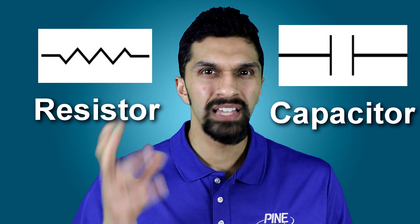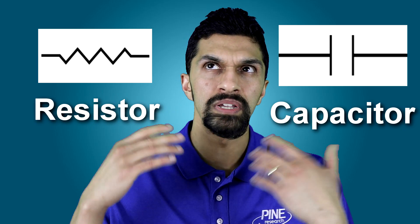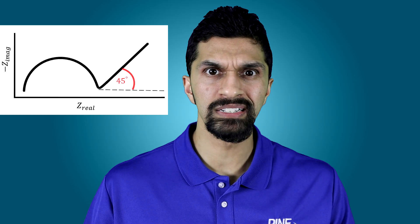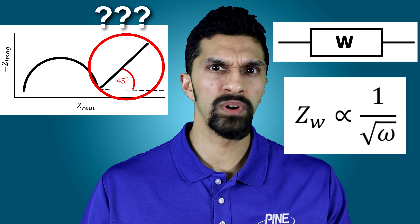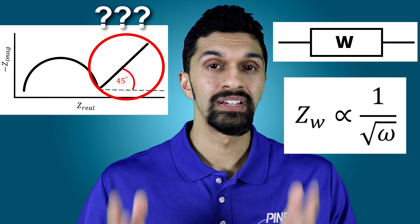I've always had a hard time understanding Warburg impedance. Warburg impedance is the impedance associated with mass transport, specifically diffusion. While I could conceptually understand the impedance associated with a resistor or a capacitor, I never had an intuitive understanding of the impedance associated with diffusion. Why is it that you get this 45-degree angle in the Nyquist plot? Why is it that the Warburg circuit element has a 1 over the square root of frequency dependence? In this video, I'd like to share what I would consider to be a conceptual or intuitive understanding of Warburg impedance.